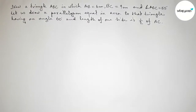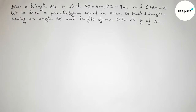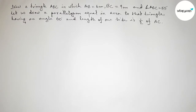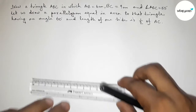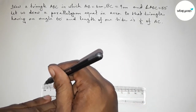Hi everyone, welcome to this class. Today in this video we are doing an important geometrical construction. First, draw a triangle ABC in which AB equals 6 centimeters, BC equals 9 centimeters, and angle ABC equals 55 degrees. Then draw a parallelogram equal in area to triangle ABC, having an angle of 60 degrees and a side length half of AC. Please watch the video till the end.